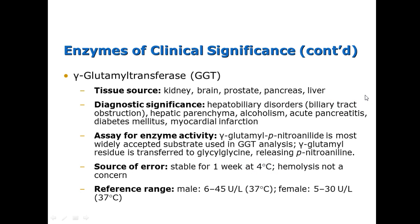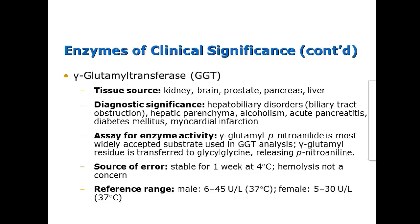Gamma-glutamyl transferase (GGT) is found in the kidney, brain, prostate, pancreas, and liver. Its diagnostic significance includes hepatobiliary disorders, hepatic parenchymal disease, alcoholism, acute pancreatitis, diabetes, and myocardial infarct. GGT is very specific for alcoholism — students remember this with the mnemonic 'go get tequila.' The reference range is 6 to 45 units per liter for males and 5 to 30 for females.